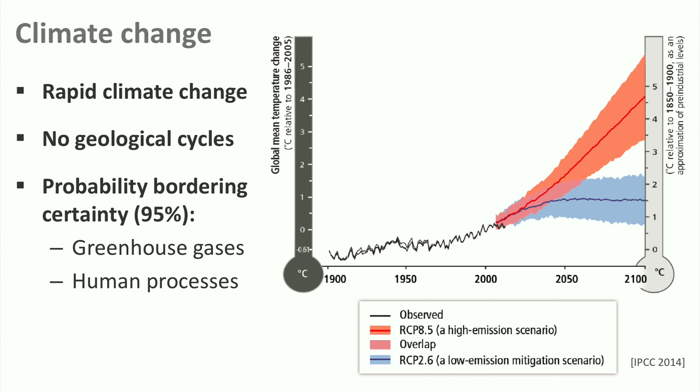Estimates are varying, but the temperature on earth will most probably rise between 1.5 and 5 degrees within this century, depending on the action taken or not. All scenarios will have consequences, some very severe. Therefore, it is not for nothing that climate scientists call for urgent action.